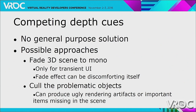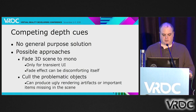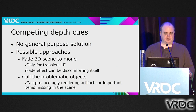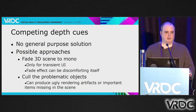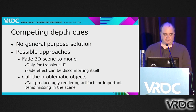The other option is you can cull the problematic objects, but culling objects can result in bisected avatars or important items missing from the scene. For our purposes at the moment at High Fidelity, what we just do is live with the competing depth cues.